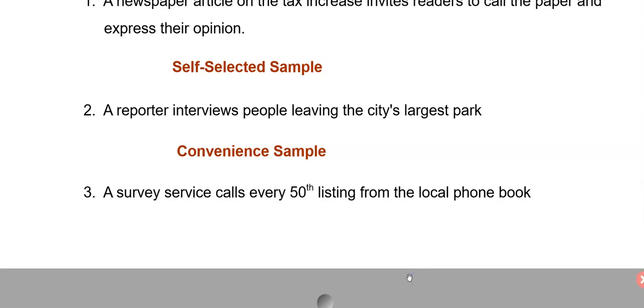A survey service calls every 50th person in the phone book. Well, that seems like they've thought it out through. That's a very systematic way of doing things. That's a systematic sample. So usually you can kind of categorize what type of method you're using to sample people.